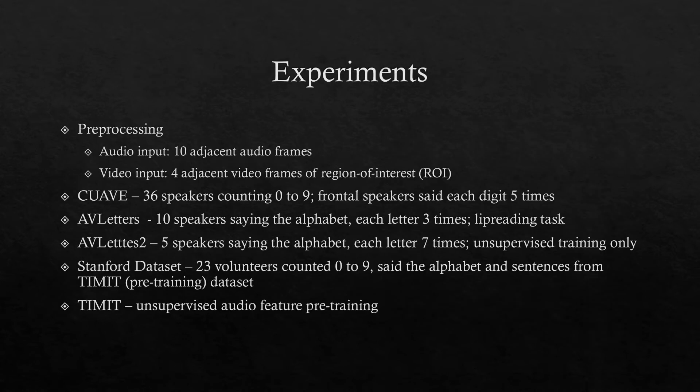For this experiment, the methods were evaluated using audio-visual speech of letters and digits. The sparseness parameter was chosen using cross-validation and all other parameters were fixed. Ten contiguous audio frames and four video frames were used as the input. The audio frames are 100 dimensions with PCA whitening. The videos were processed to extract the mouth as the region of interest, and each region of interest is 32 dimensions with PCA whitening. Temporal derivatives were also used to model dynamic speech information.